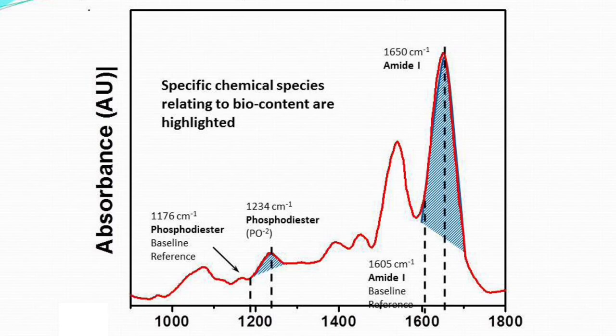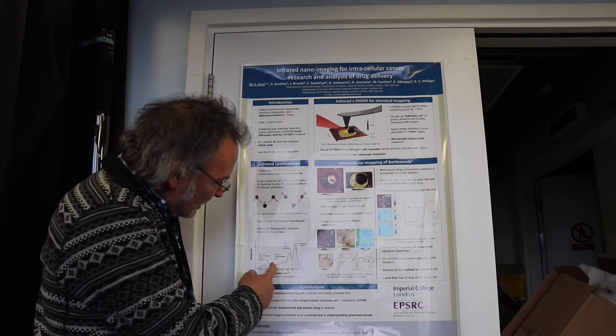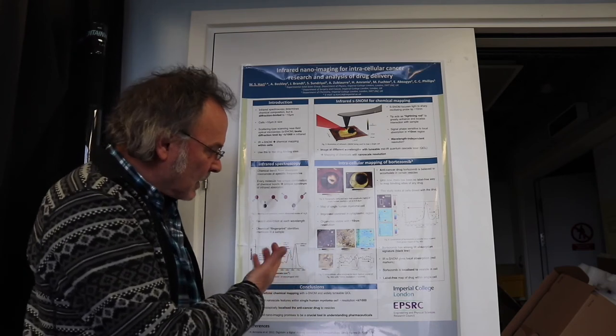So you can actually measure the chemical changes in the tissue, particularly when cancer happens. We see an increase in the DNA in the cell and a reduction in the protein. And that tells you that cancer is happening and it's a way of diagnosing cancer.